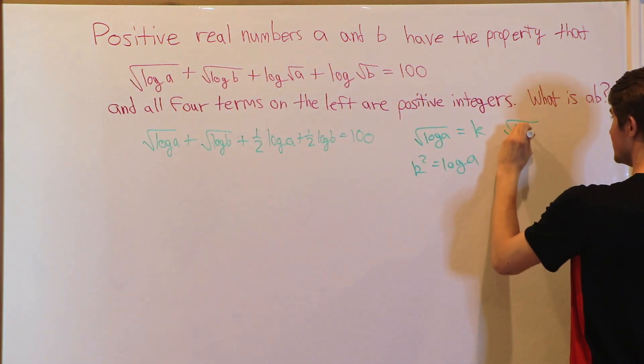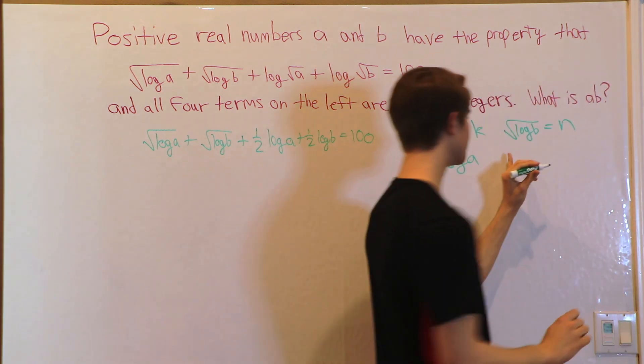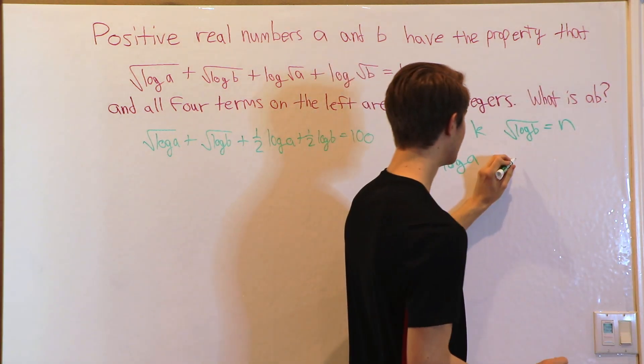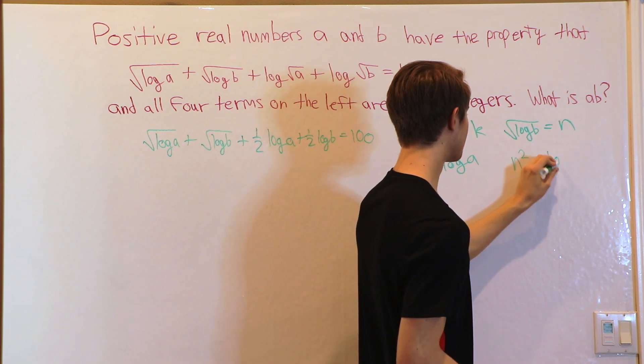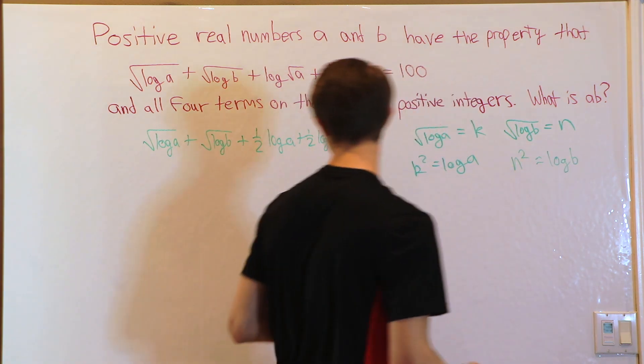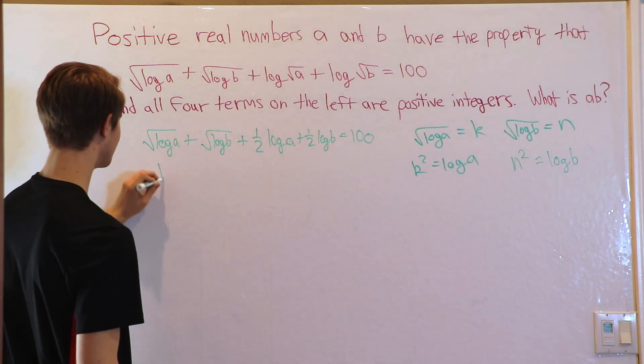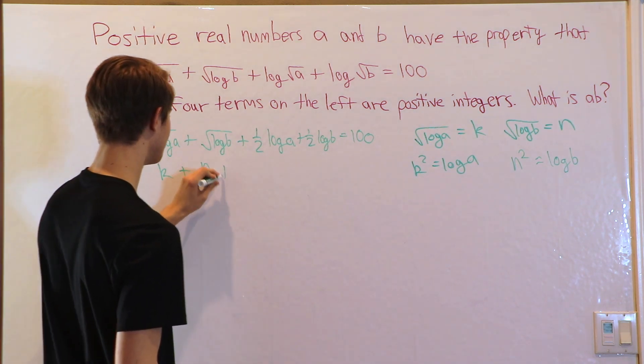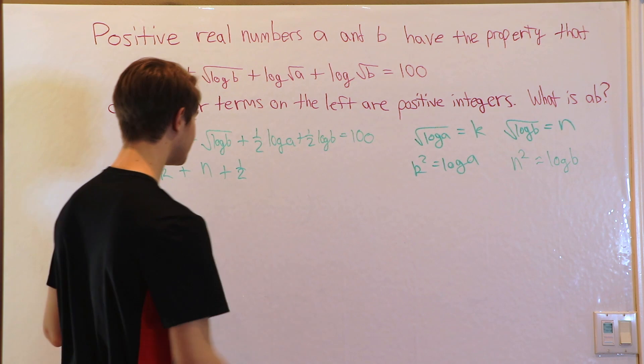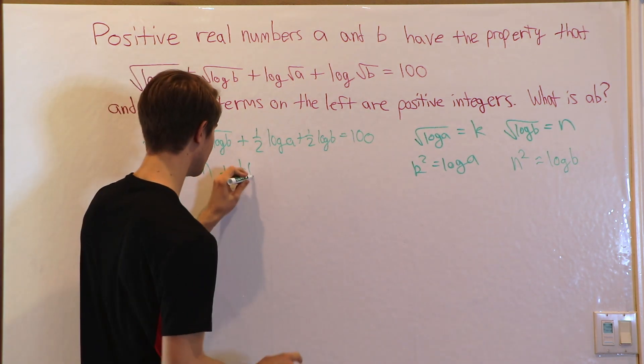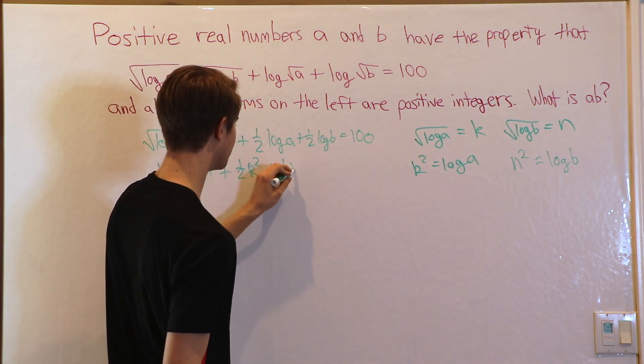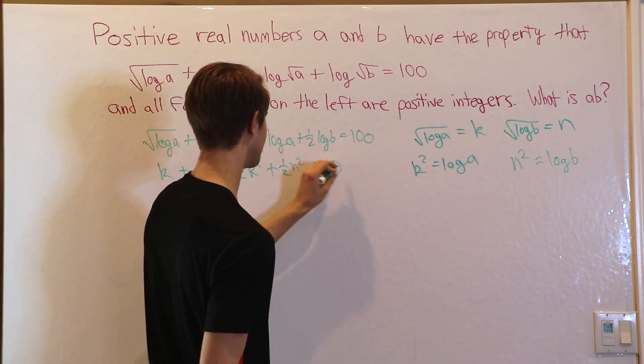Square root log B equals N. Which means we can take N squared equals log B. Now we're getting somewhere. So let's go back to this equation. This right here is K. This is N. And then we have one-half. Log A is K squared. Log B is N squared. This equals 100.